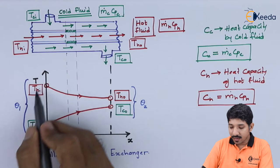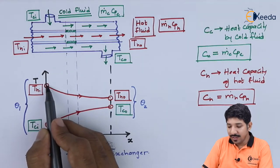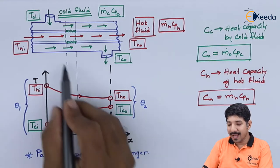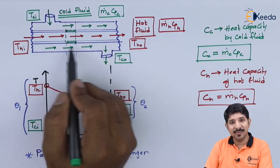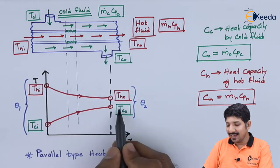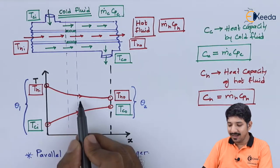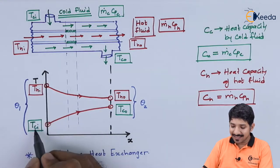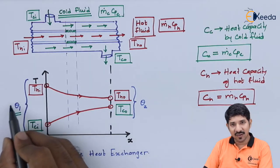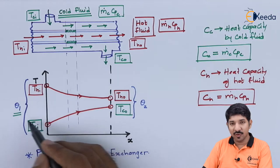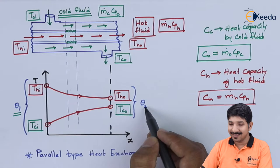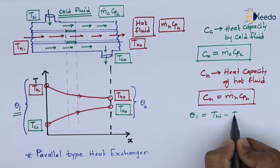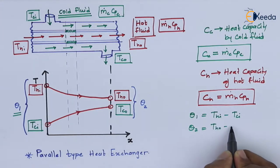This point indicates the inlet of the hot fluid THI, and the temperature of the hot fluid decreases parabolically until it reaches THO. Since it is parallel flow, both hot and cold fluid follow the same direction. The cold fluid enters at TCI and exits at TCO. The difference between inlet temperatures of hot and cold fluid is theta 1 = THI − TCI, and the difference between exit temperatures is theta 2 = THO − TCO.